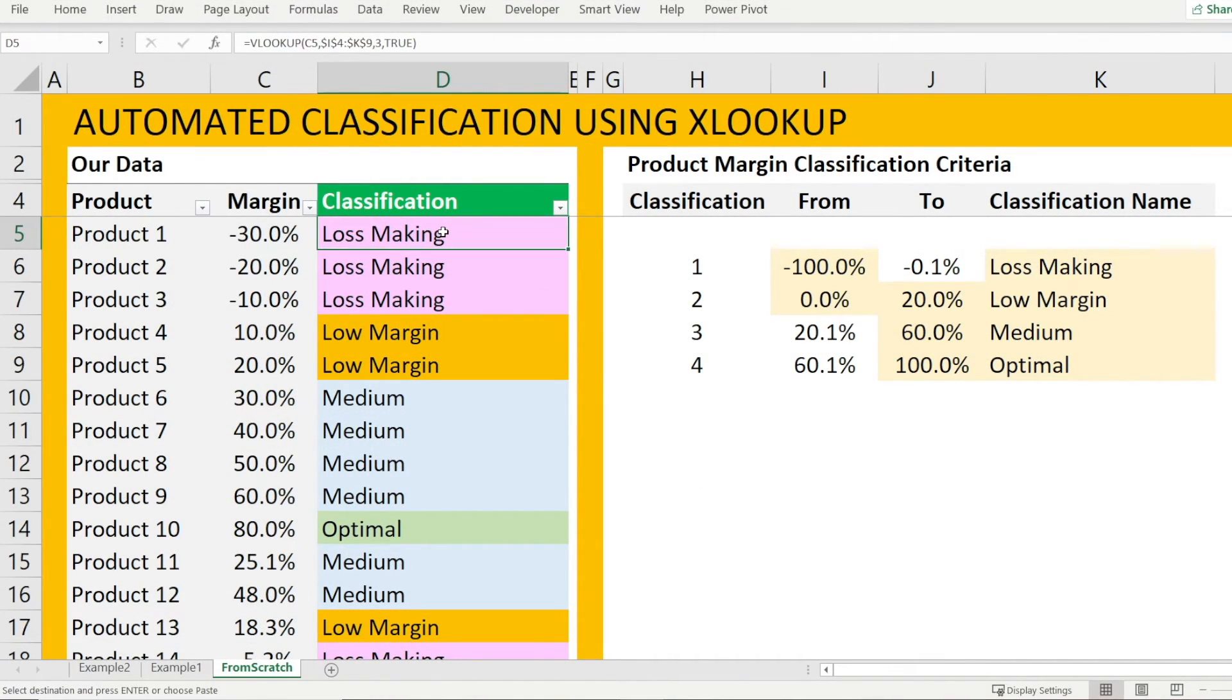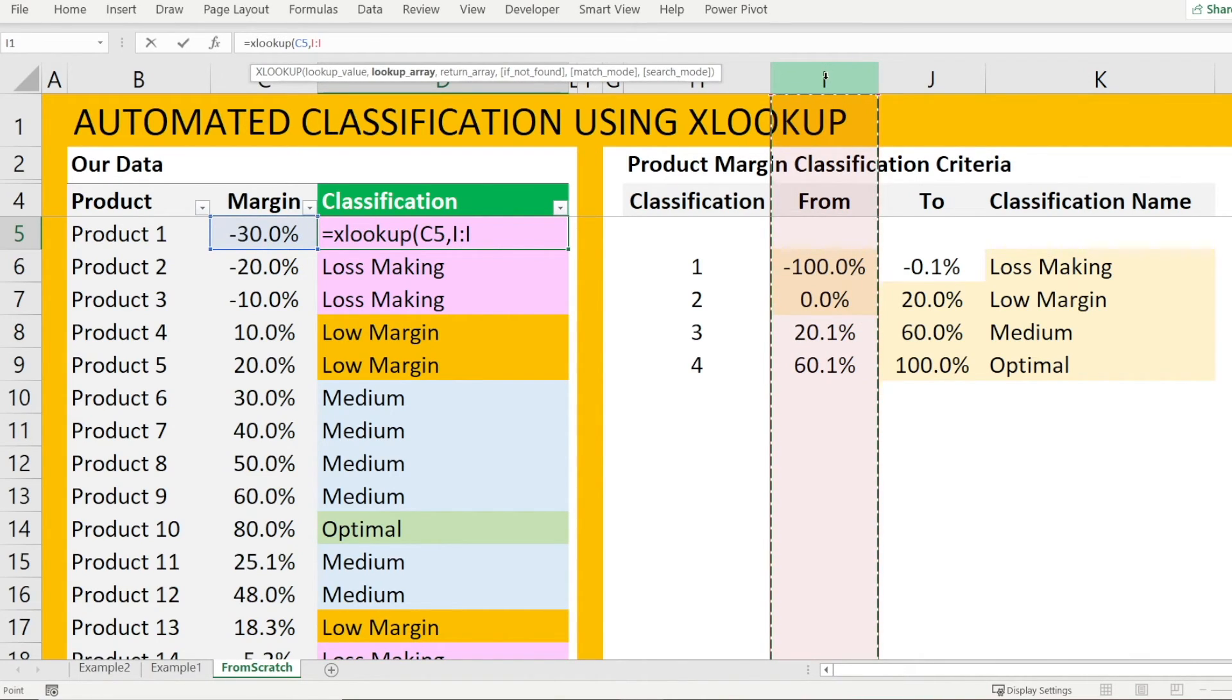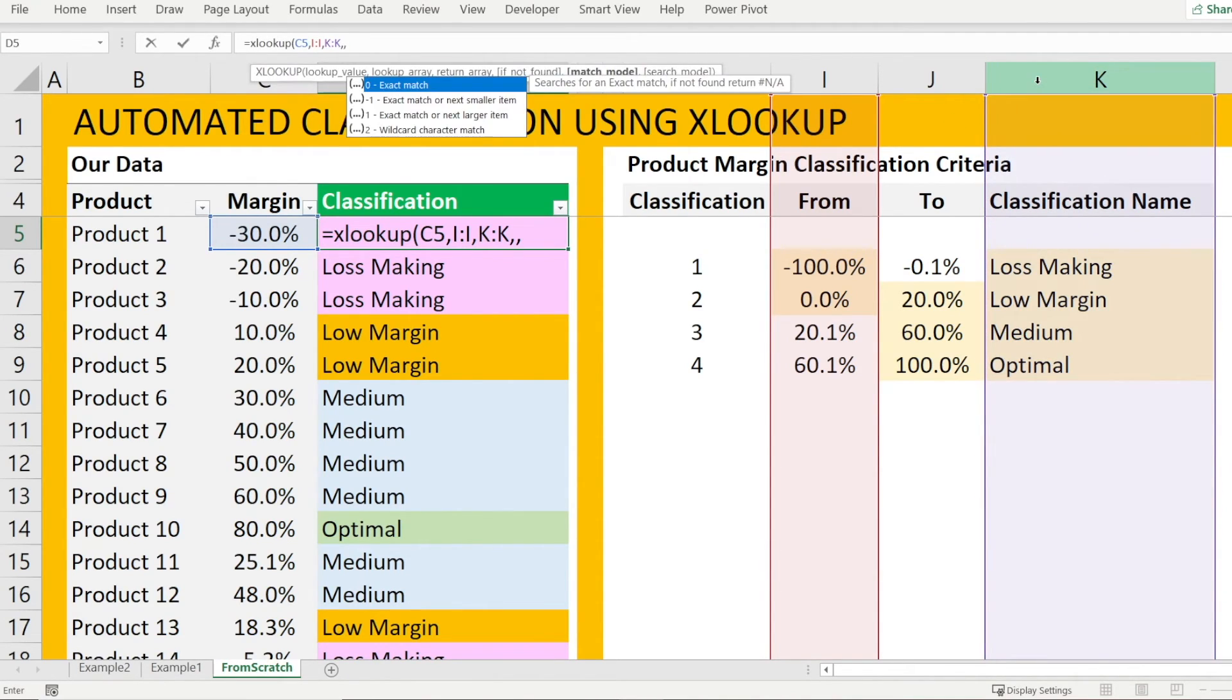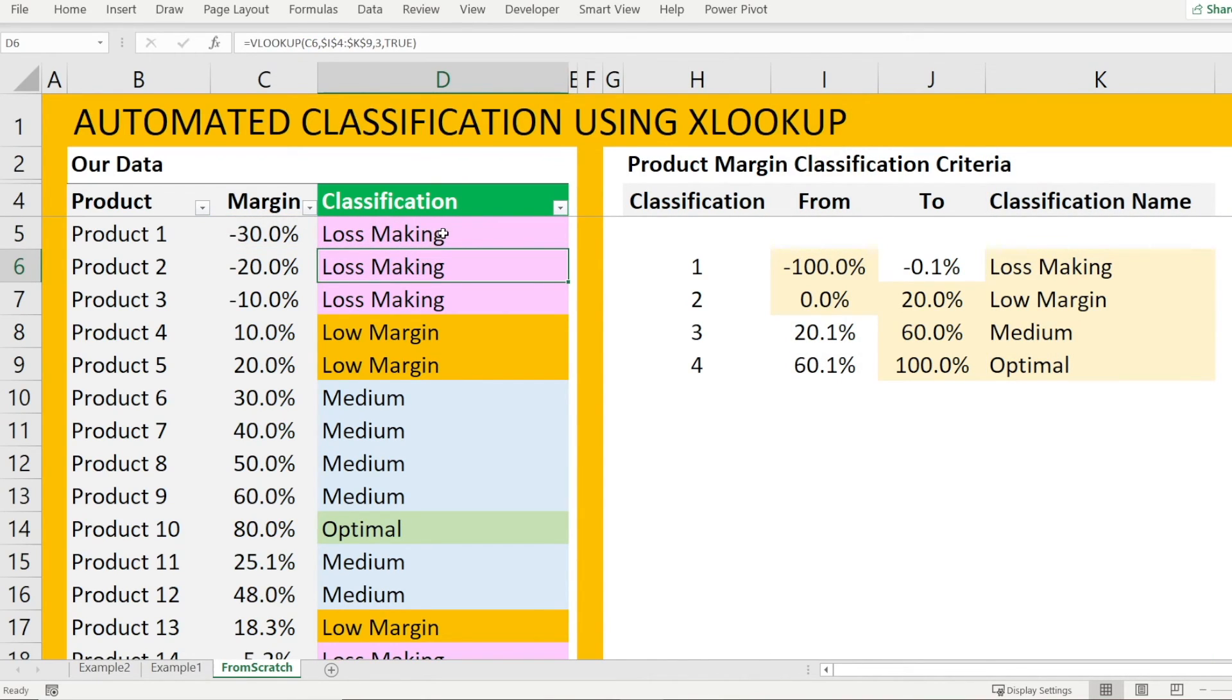All right. So let's replace the VLOOKUP formula with XLOOKUP. Anything that we can do with VLOOKUP, we can do it with XLOOKUP. So type equal XLOOKUP. The lookup value is our margin. The array is our from column. And then the return array is our classification name. If not found, nothing. And then the next criteria should be minus one, which is return the exact match or the next smaller item. And then after that, nothing. And done. Same thing with XLOOKUP. Double click it at the end to copy the formula down. And now everything is with XLOOKUP. Same result.